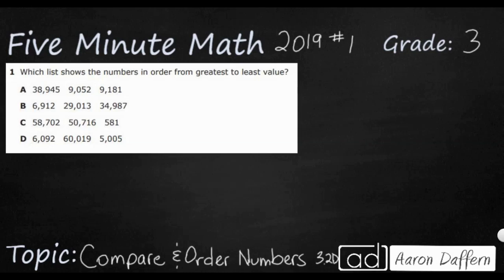Hello, and welcome to 5-Minute Math. Today we are looking at the third grade concept of comparing and ordering numbers. That is standard 3.2D in the great state of Texas, and we'll be using item number one of the 2019 released STAAR test.